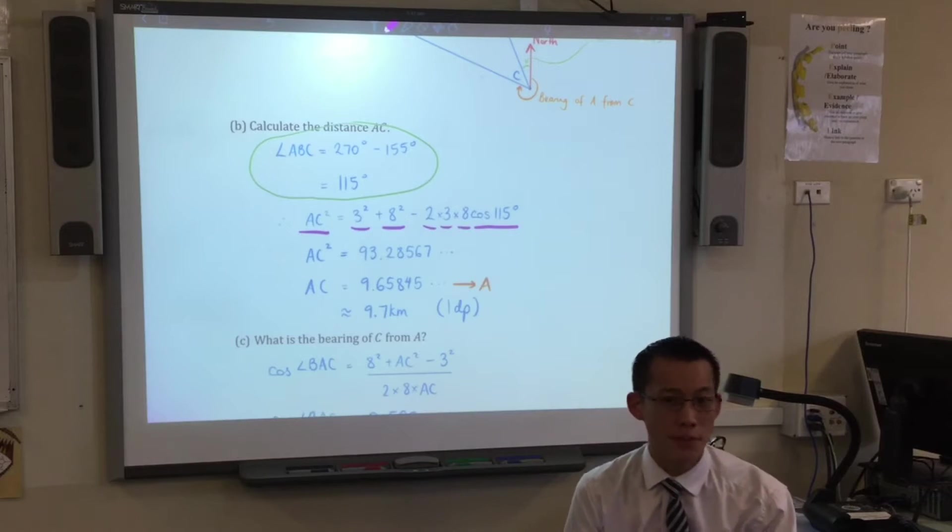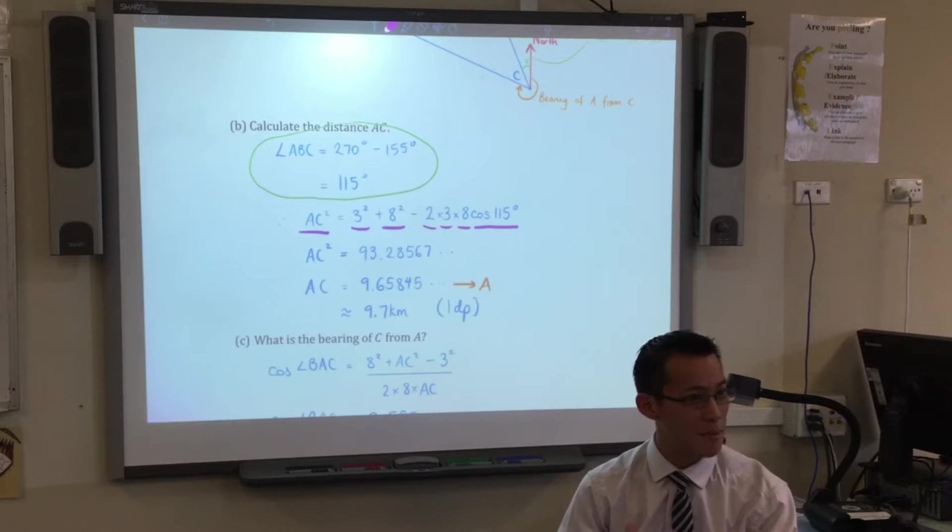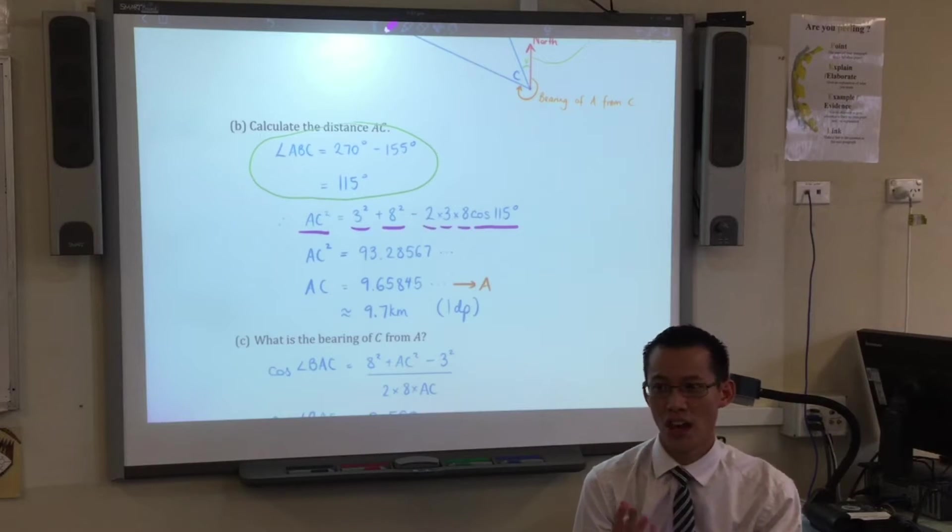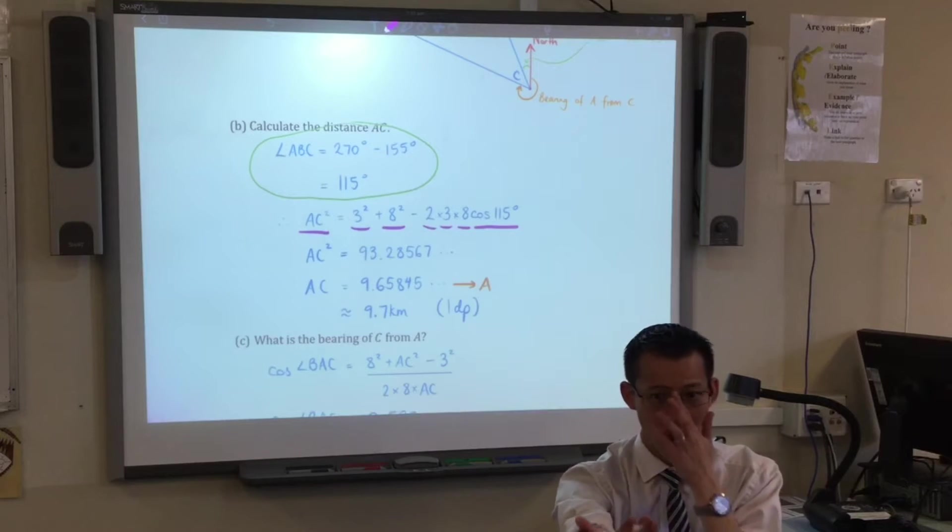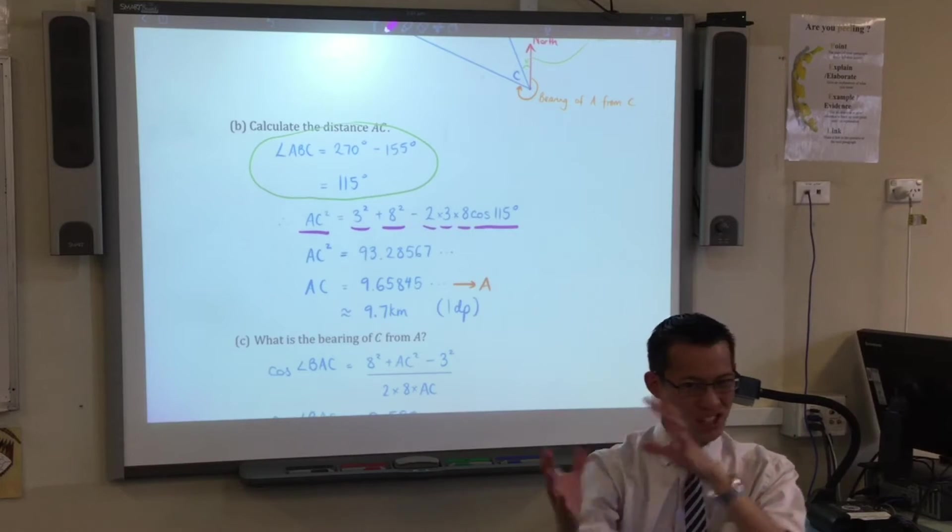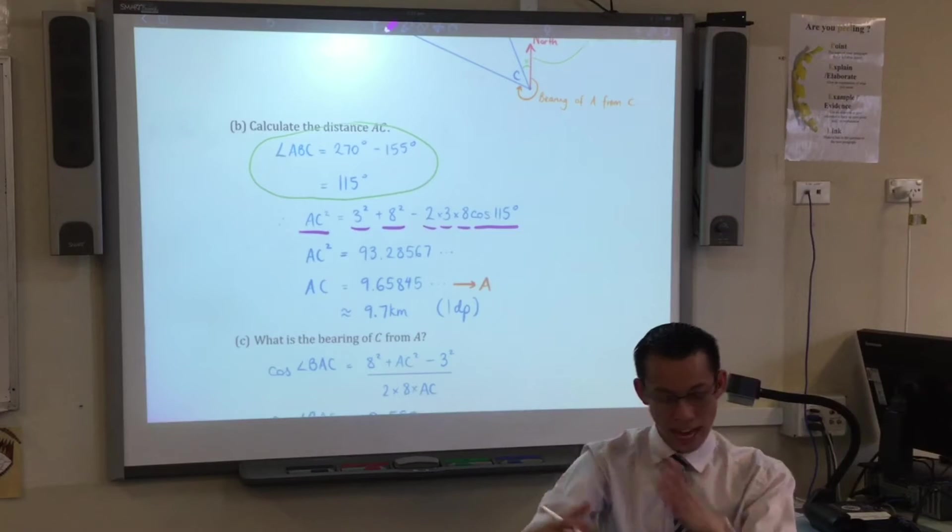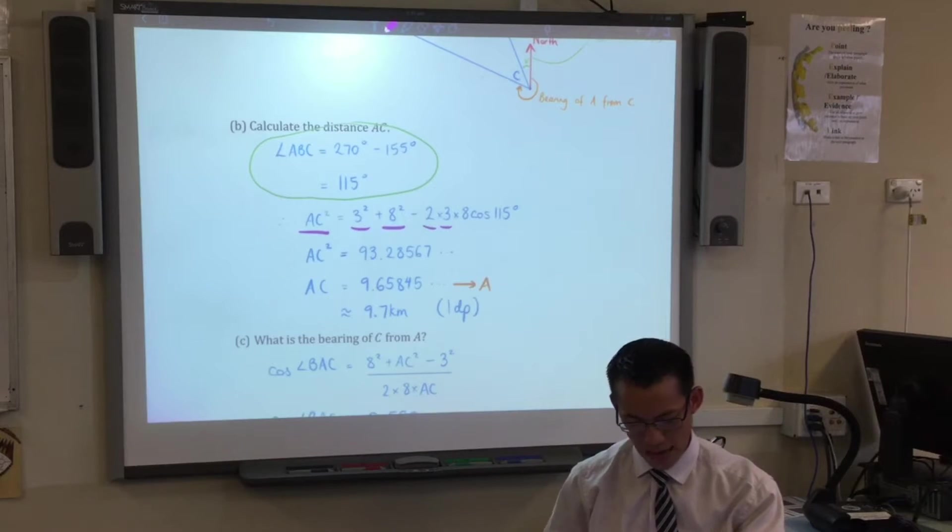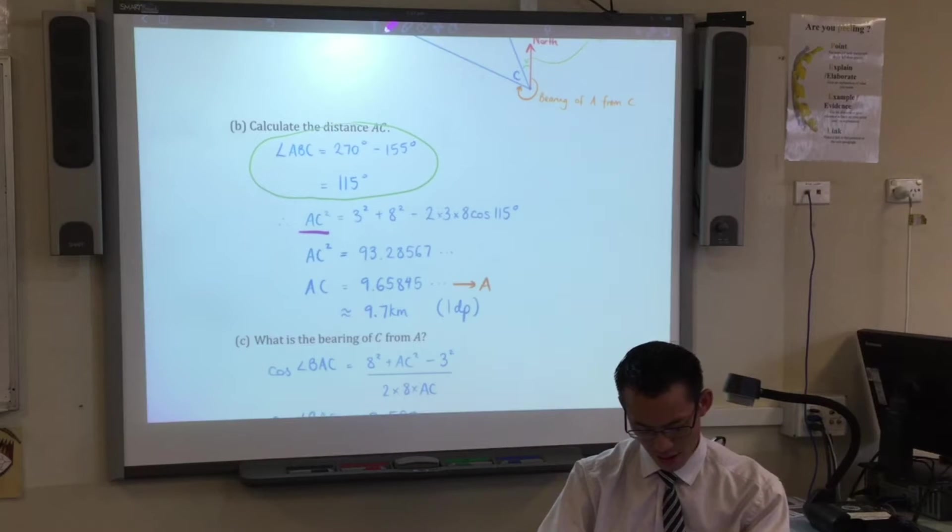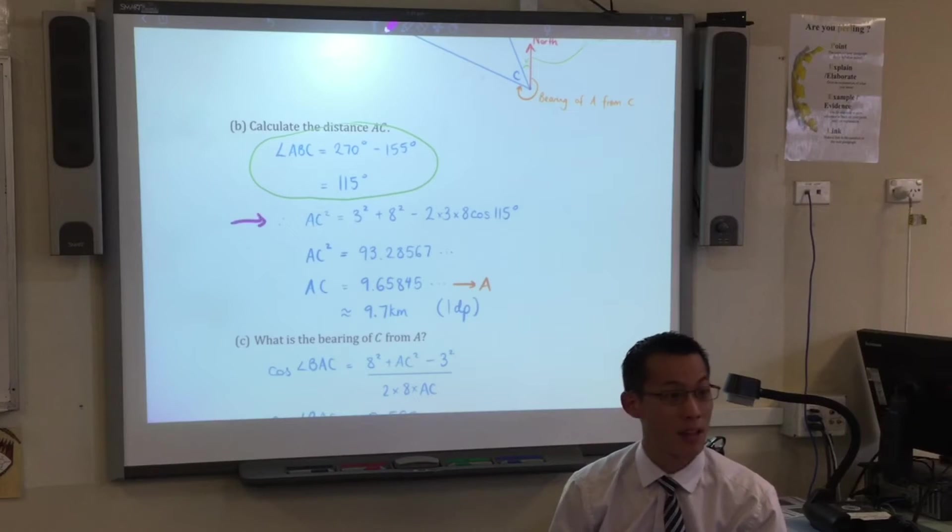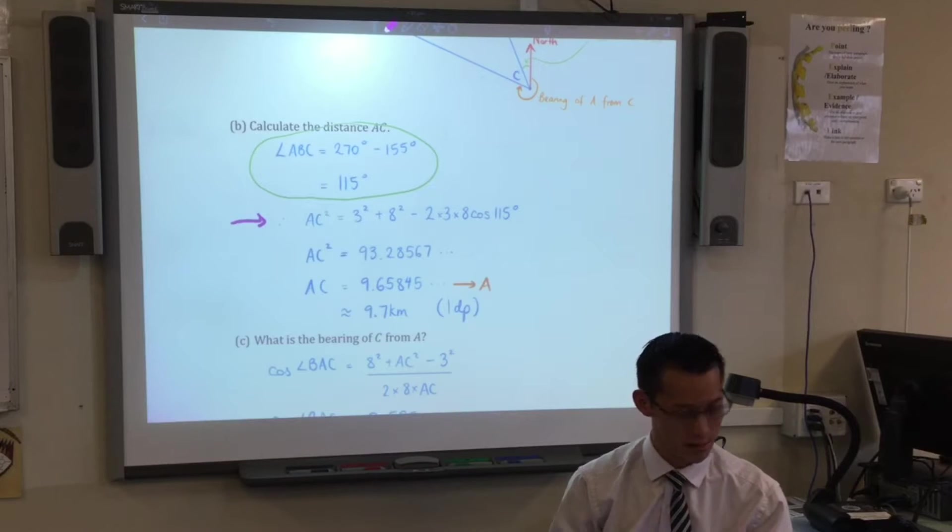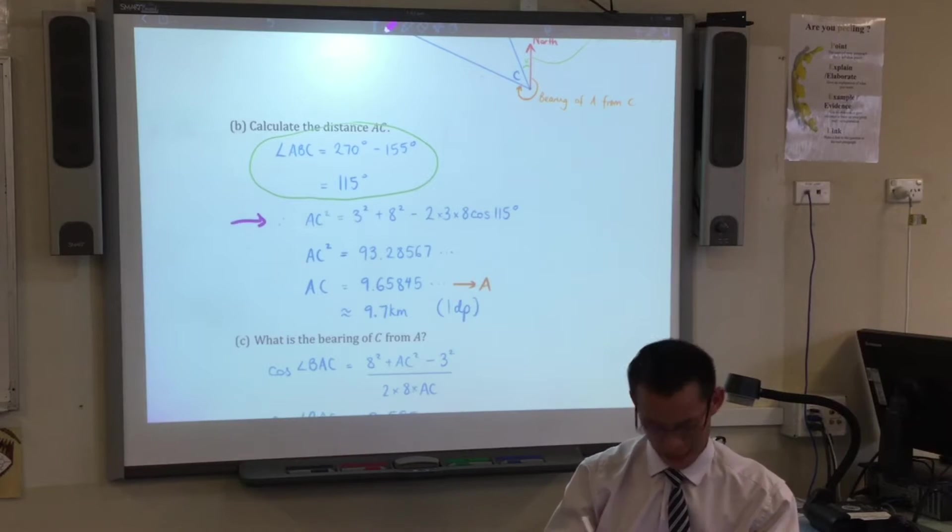This is c squared equals a squared plus b squared minus 2ab cos c. Now, I don't write the formula down. Part of the reason is because there's already an a and a b and a c in the question, and I don't want to confuse myself. So I've looked at the formula sheet, noticed which side is relative to which angle, and so I've written down that line. How does that look? Are we okay up to this line? Or do you want me to slow down?